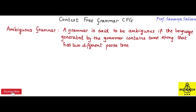The next concept we will be understanding is whether a grammar is ambiguous or not. A grammar is said to be ambiguous if the language generated by the grammar contains some strings that have two different parse trees. So if the grammar has got two different parse trees for some string, I can say that the grammar is ambiguous.